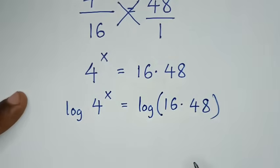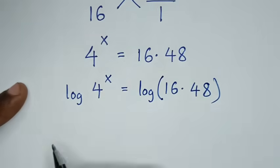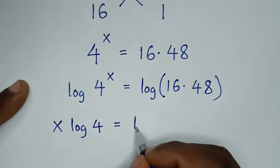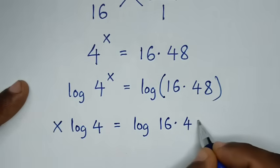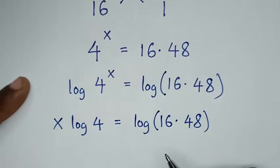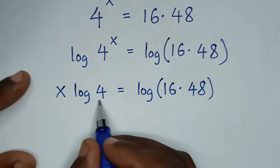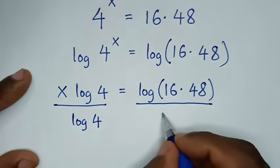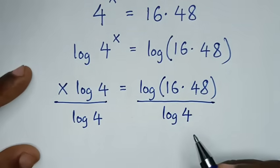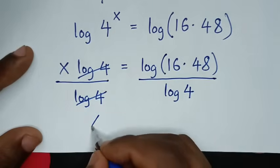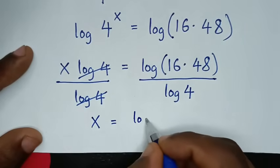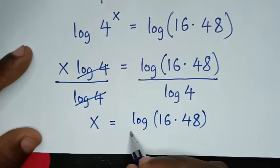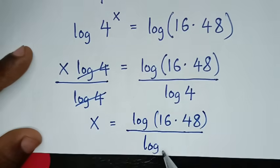Then this power of x will move to the base, so it will be x log of 4 is equal to log of 16 times 48. Then we'll divide by log of 4 on both sides — over log of 4 on this side and over log of 4 on that side. This log of 4 will cancel this log of 4, then it will be x is equal to log of 16 times 48 over log of 4.